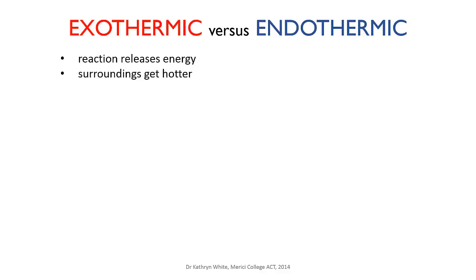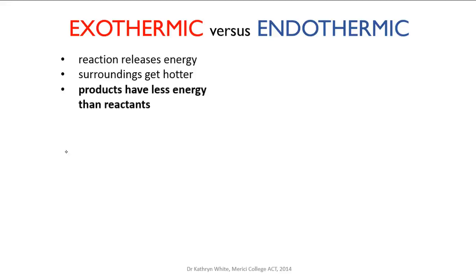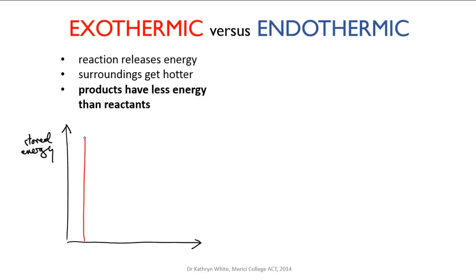Recall from the last video that we could classify reactions into exothermic and endothermic reactions. In an exothermic reaction, as the reaction proceeds, energy is released. This means that some energy that had been stored in the chemical bonds of the reactants is now transformed into heat or light energy and is released to the surroundings.